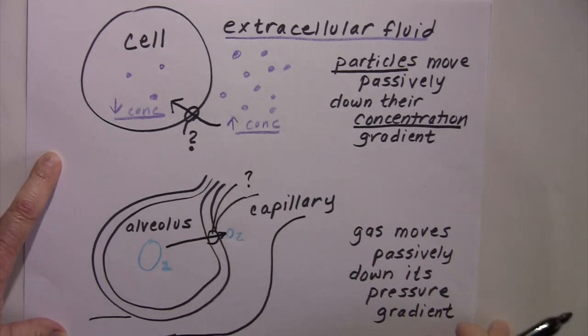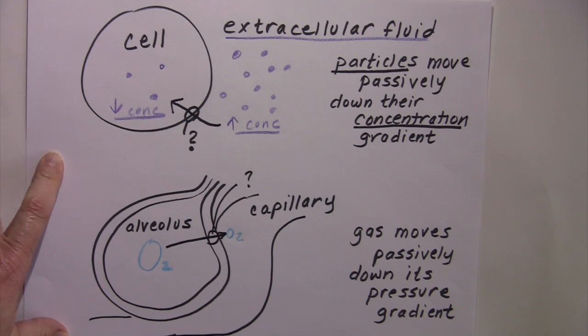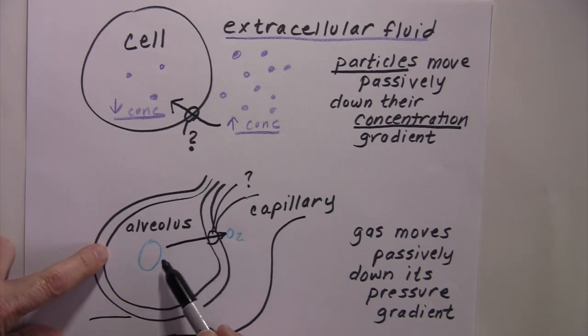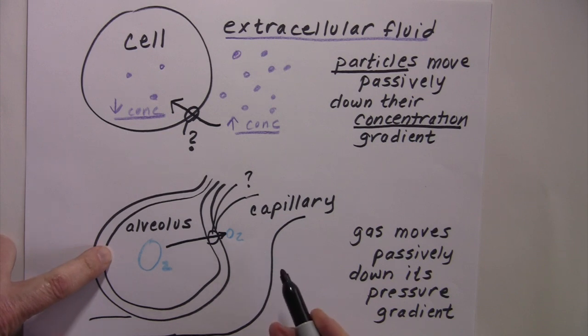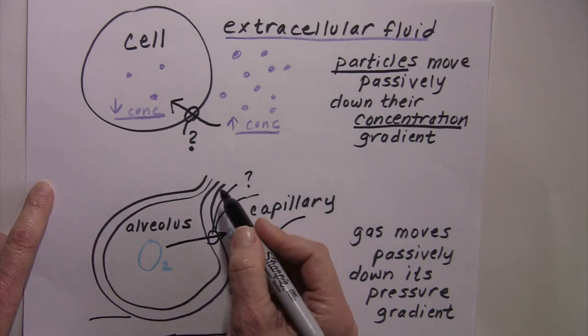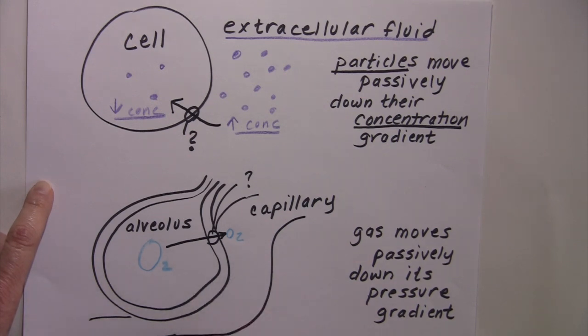Let me say that oxygen and carbon dioxide are both lipid soluble, so they'll be able to cross plasma membranes down their pressure gradients just as long as that barrier is thin enough for them to cross it. And so this is how gas exchange occurs.